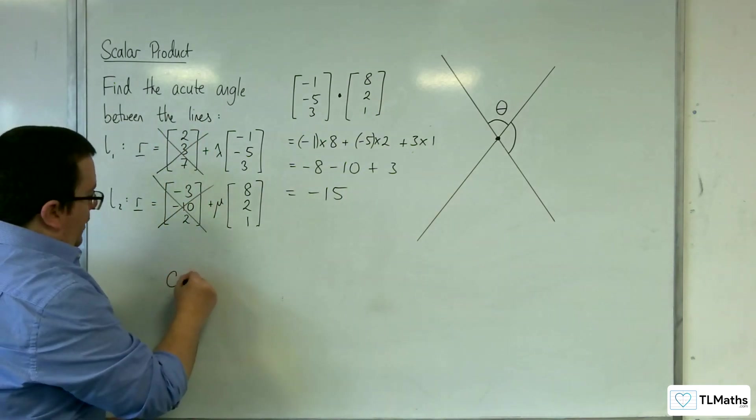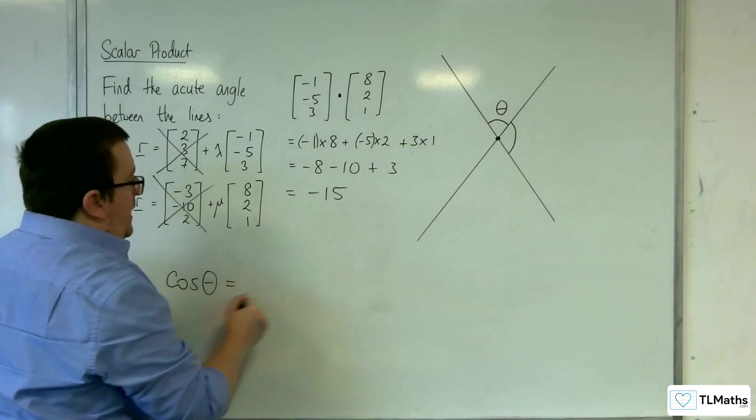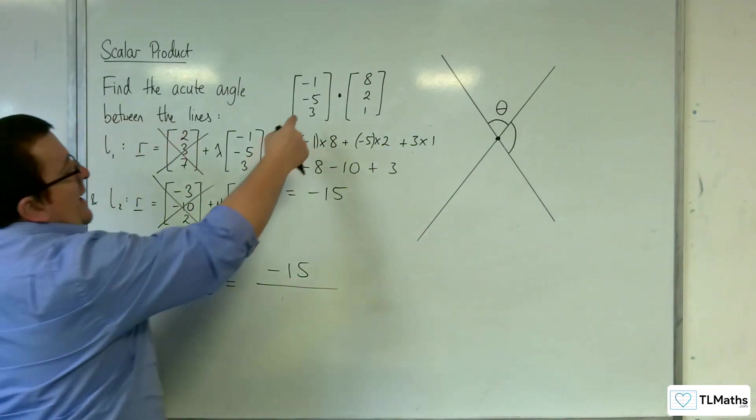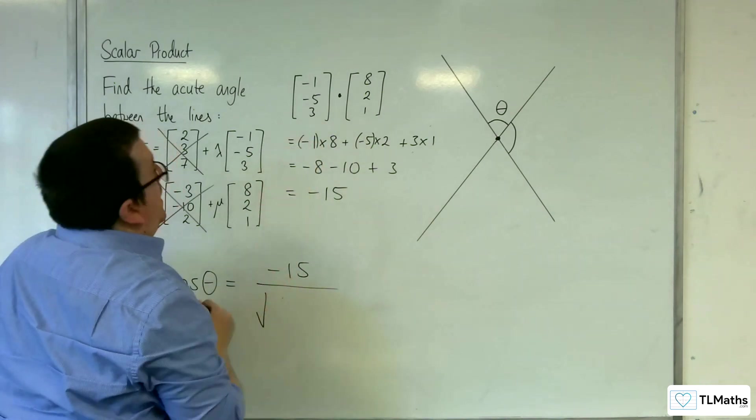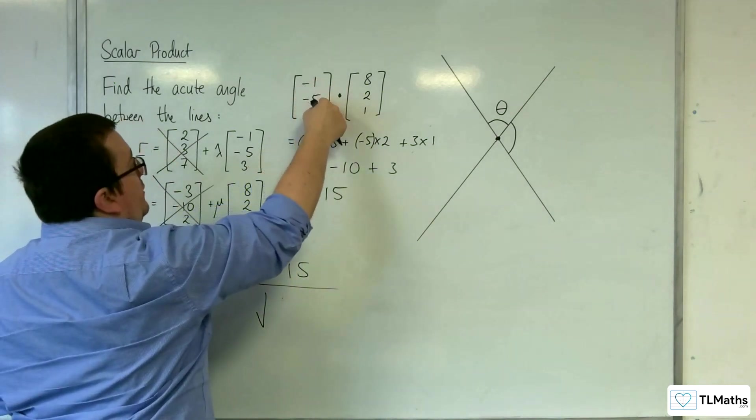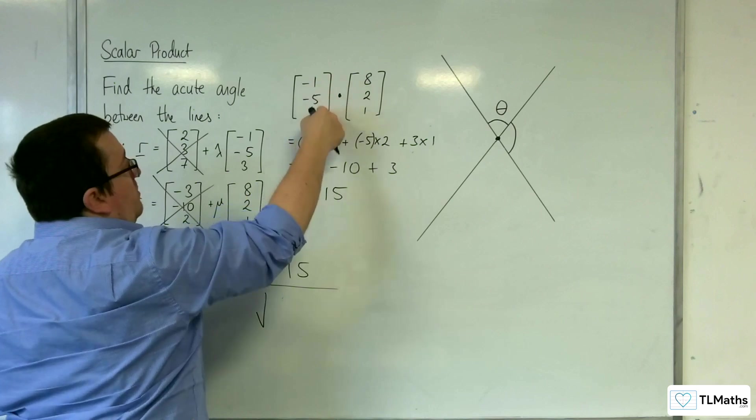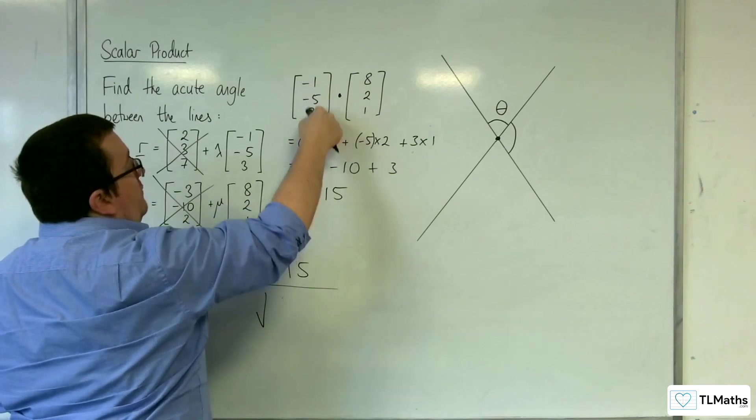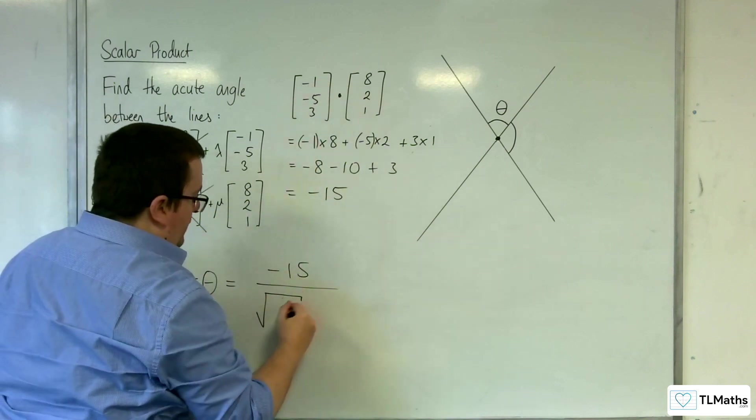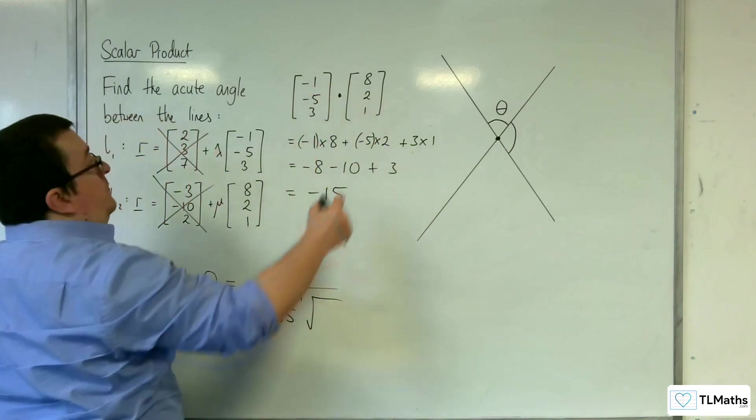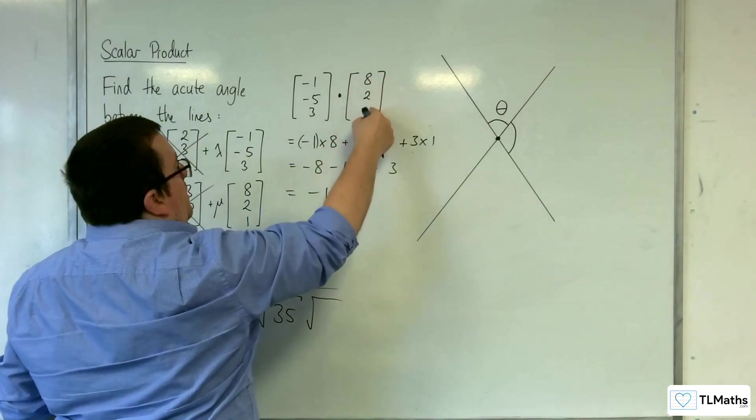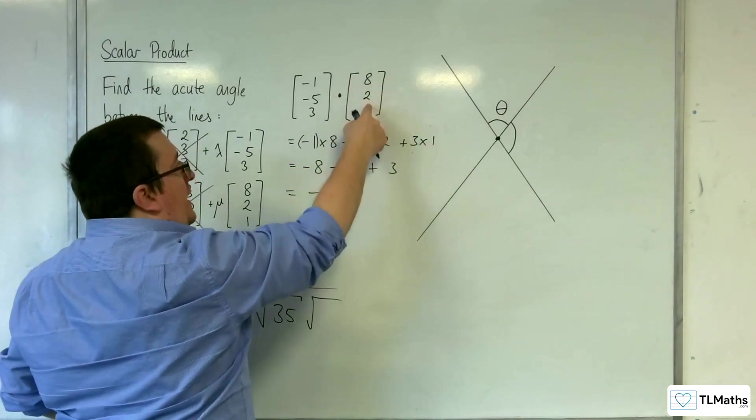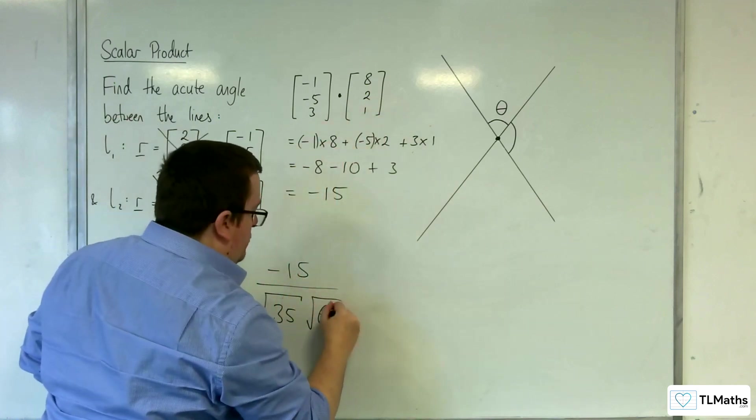So cosine of the angle will be equal to minus 15 divided by the length of this vector. So the square root of 1 squared plus 25 plus 9. So that will be 25 plus 9 is 34, so 35, so root 35. And then we've got 8 squared plus 2 squared plus 1 squared. So 64 plus 4 is 68, plus 1 is 69. So root 69.